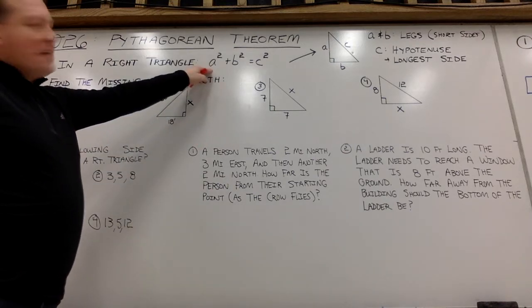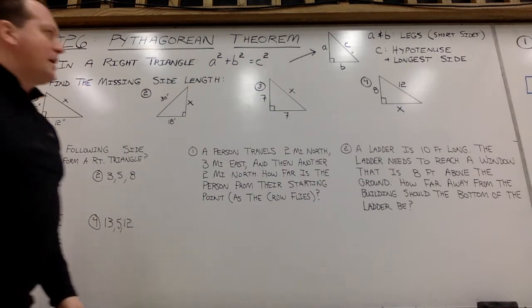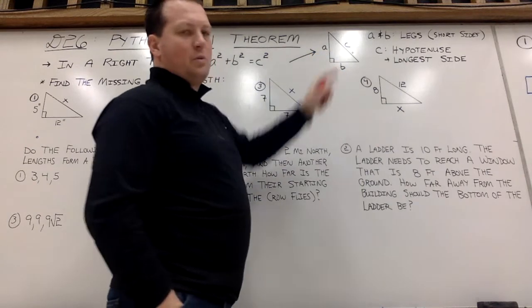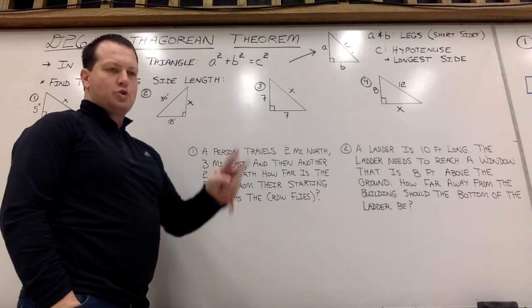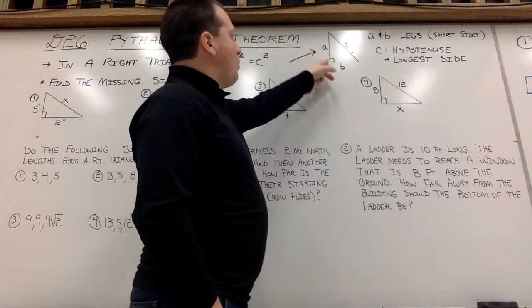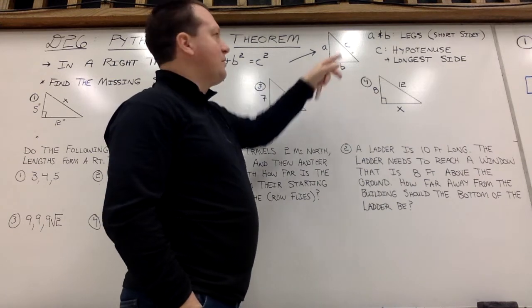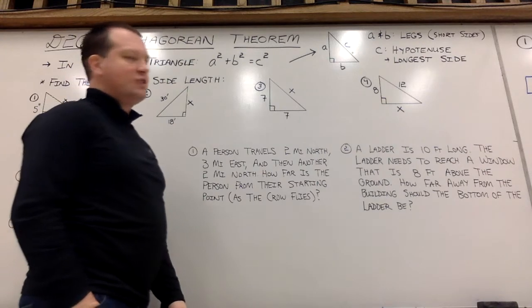Pythagorean Theorem states that a squared plus b squared will always equal c squared. a and b are the two legs of the right triangle. They are the two shorter sides. They always meet at the 90 degree or right angle.